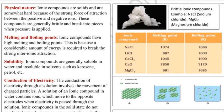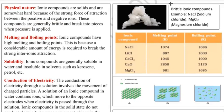These compounds are generally brittle and break into pieces when pressure is applied. When pressure is applied, they generally break. Examples of brittle ionic compounds include sodium chloride or magnesium chloride.